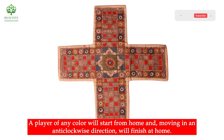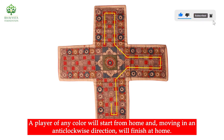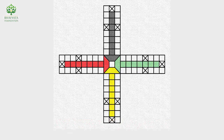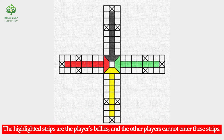A player of any color will start from home and, moving in an anticlockwise direction, will finish at home. The highlighted strips are the players' bellies, and other players cannot enter these strips.